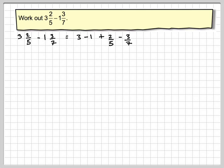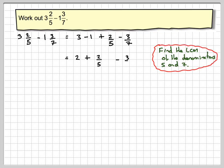3 take away 1 is 2. Then we need to find the lowest common denominator of 5 and 7. The lowest common denominator of 5 and 7 is 35.